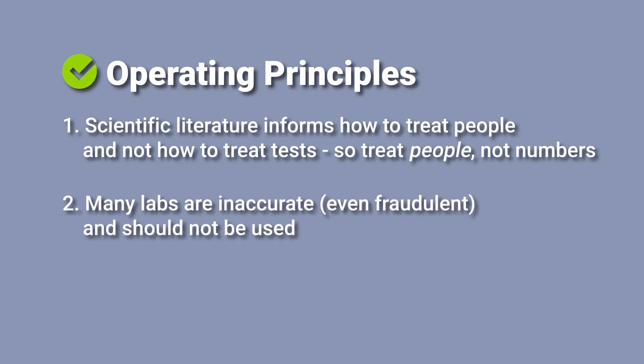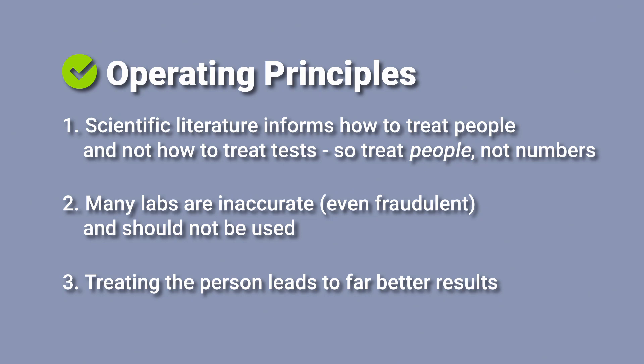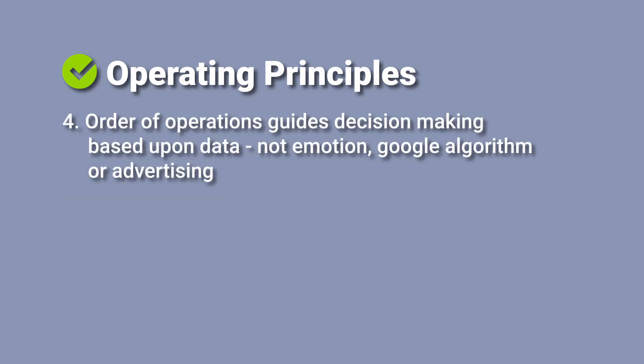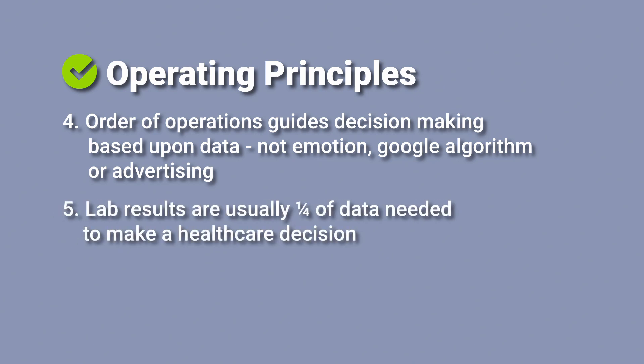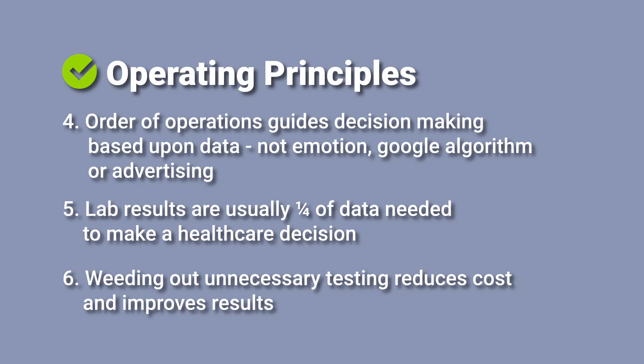In recap, these operating principles really guide our clinical model and the care that we provide. The scientific literature tells us how to treat people, not numbers. Many labs are inaccurate, even fraudulent, and should not be used. Treating the person leads to far better results. An order of operations guides decision-making based upon data, not on emotion, the Google algorithm, or advertising. Lab results are one-fourth of the data needed to make a healthcare decision. And by weeding out unnecessary testing, this reduces the cost and improves the results.